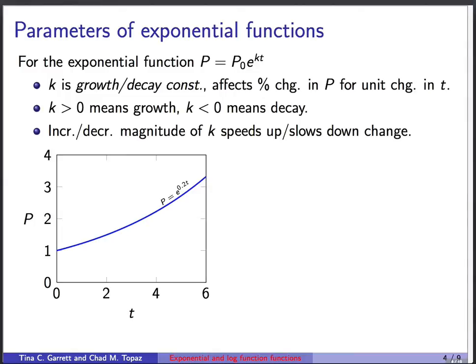Now let's talk about the other important parameter, k. k is the growth or decay constant. It's what affects or controls the percentage change in p for each unit change in t. Positive numbers in that exponent, something positive in front of the t means growth. Something negative in front of the t means decay. Increasing or decreasing the magnitude of k speeds up or slows down that change. Let me show you.